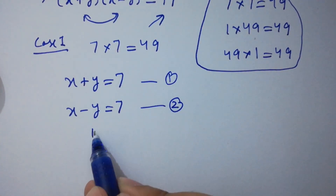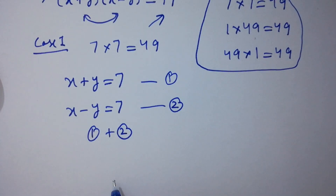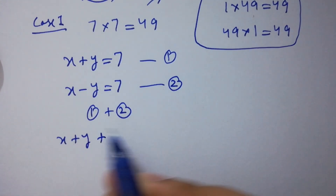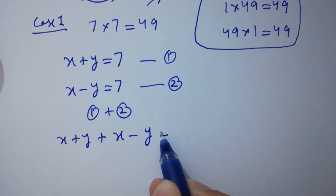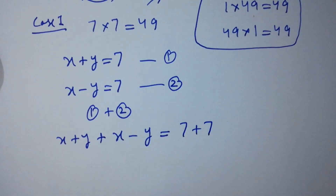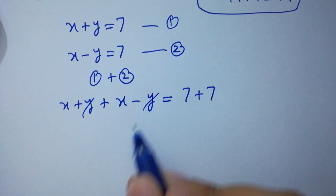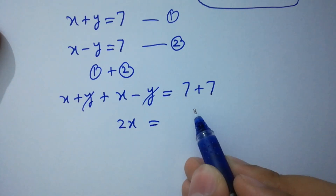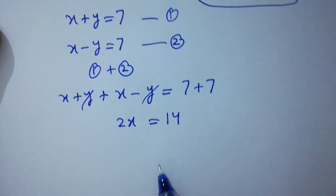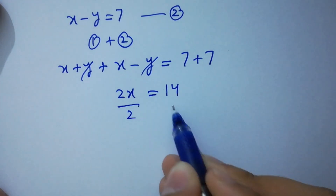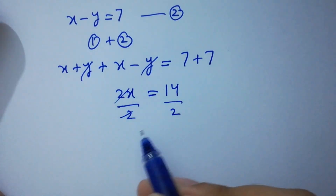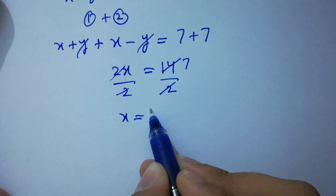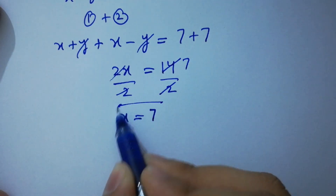Add them. We have x plus y plus x minus y equal to 7 plus 7. The y terms cancel, giving us 2x equal to 14. Dividing both sides by 2, we get x equal to 7.